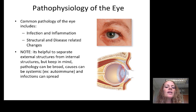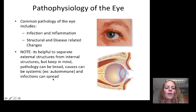Please keep in mind that pathology can be broad and the causes can be systemic. For example, many autoimmune conditions affect the eye, and infections can spread. Where something may affect one structure, it can then spread to more broadly affect the entire eye.